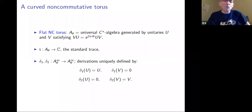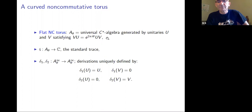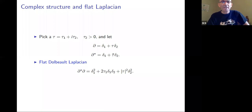The noncommutative torus, as a topological space, is a C*-algebra — the universal C*-algebra generated by unitaries U and V. There is a canonical trace and there are two derivations acting on the smooth parts. I don't need to spend any time on that.